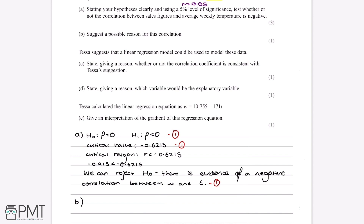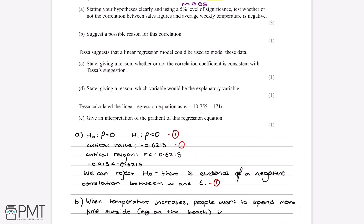Part B asks us to suggest a possible reason for this correlation — why might there be a negative correlation between W and T? Any valid explanation as to why people might be spending or shopping less when temperature increases would get the mark. For example, when temperature increases it's warmer outside, people might want to go to the beach or go on walks, spending more time outside instead of shopping, so sales would decrease.